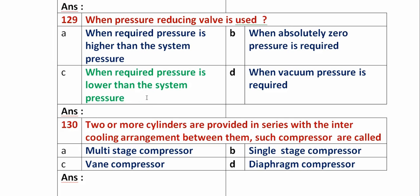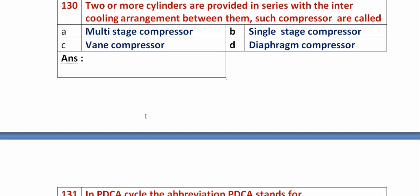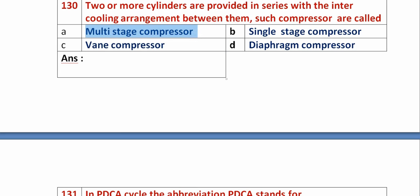Question 130: Two or more cylinders are provided in series with intercooling arrangement between them — such compressors are called? Option A: multi-stage compressor. Option B: single stage compressor. Option C: weight compressor. Option D: diaphragm compressor. The answer is in the question itself — more cylinders means multi-stage compressor. So option A, multi-stage compressor, is the right answer.